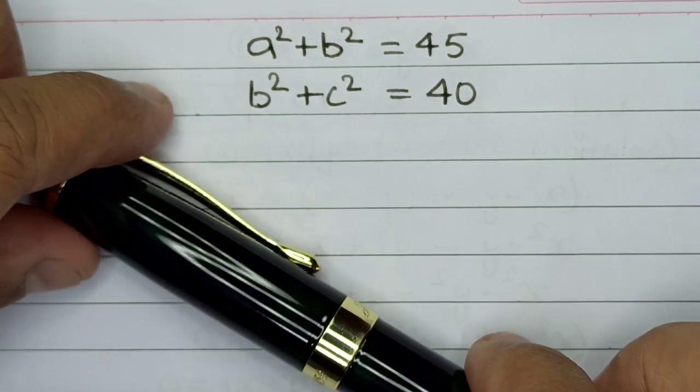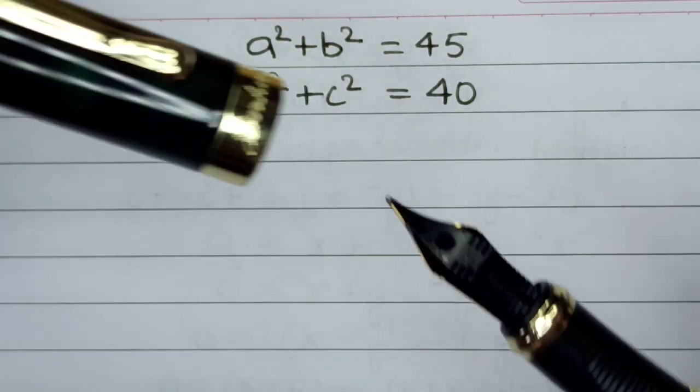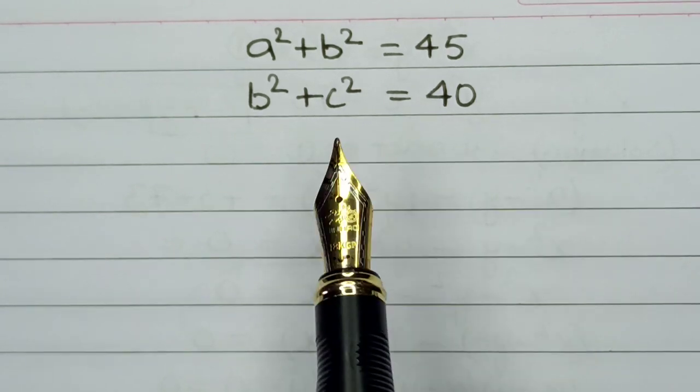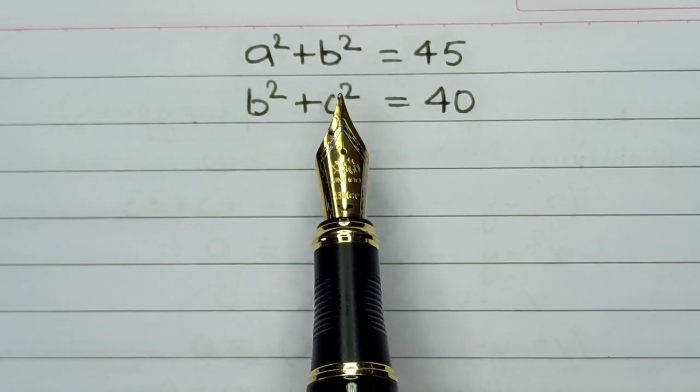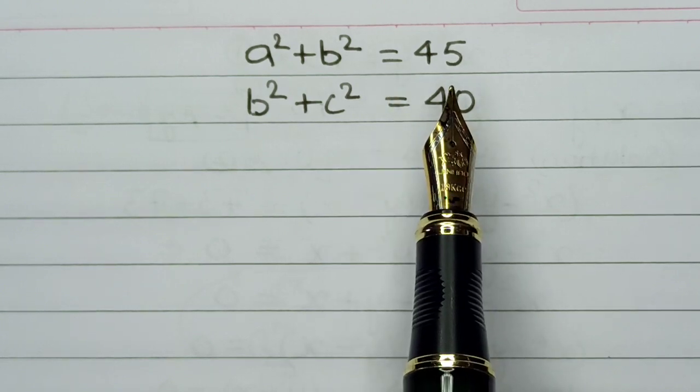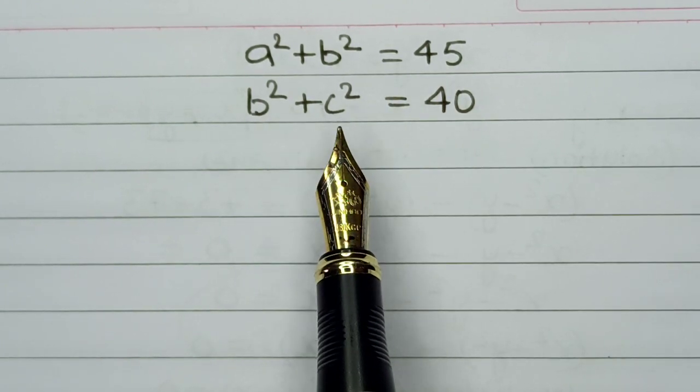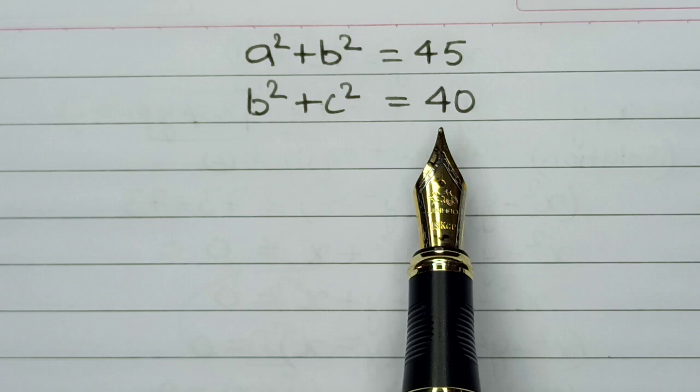Hello everyone, welcome to our YouTube channel. Today we will solve a wonderful math equation: a² + b² = 45 and b² + c² = 40.